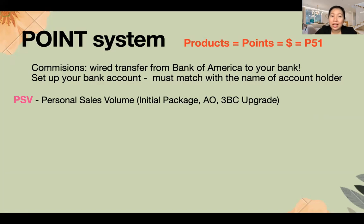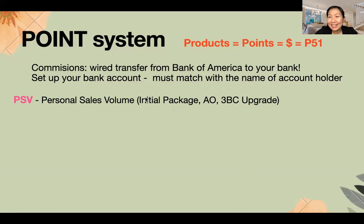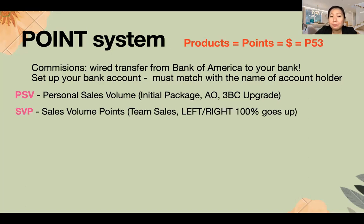PSV means Personal Sales Volume — from the word itself, personal. These are products bought using your own account: your initial package, your auto-orders, and upgrades. SVP is Sales Volume Points — all the points from all product movements below your organization on the left and right team. These are team sales. Important: all products ordered using your own account go up to your upline — they don't accumulate to you. What comes to you is the SVP — everything from below your org.